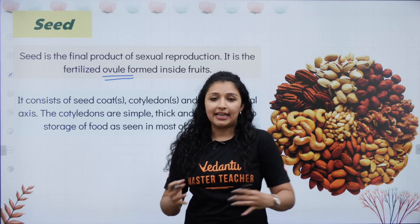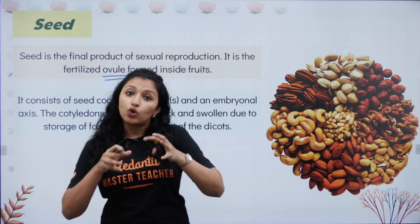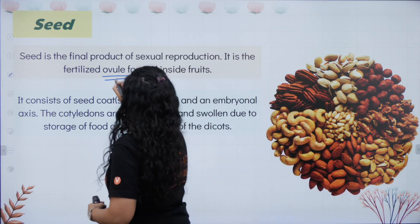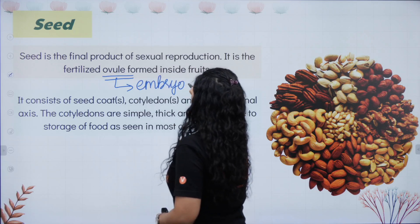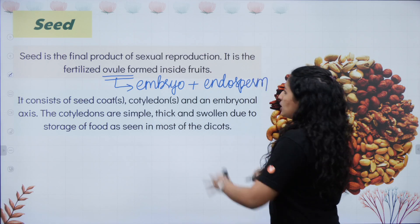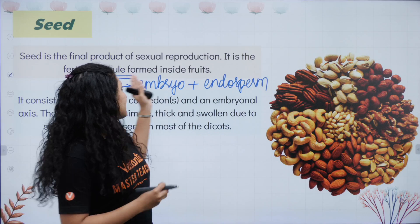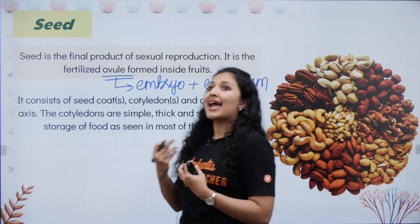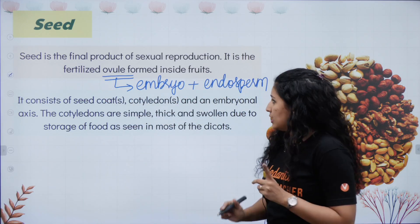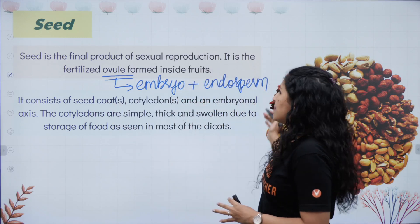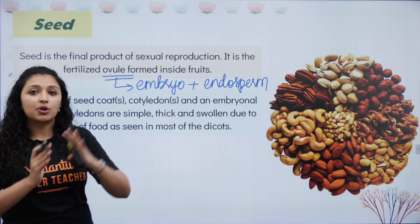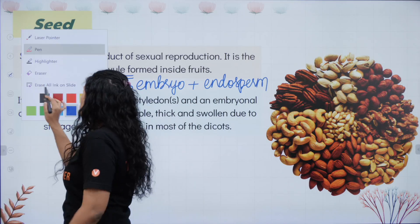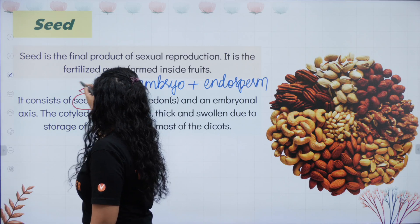In the pistil, we have the ovary. The ovary contains the ovule. After fertilization is complete, inside the ovule we have the embryo and the endosperm. This mature ovule is called a seed. The seed consists of seed coats, cotyledon, and the embryonal axis — the embryonal axis with cotyledons we have already covered in the previous session on embryo.